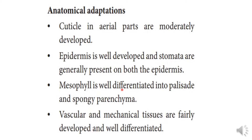Mesophyll consists of two types of tissues: palisade and spongy. They are well differentiated. Vascular and mechanical tissues are fairly developed. Supporting tissues are also developed and well differentiated.